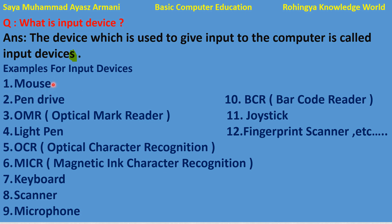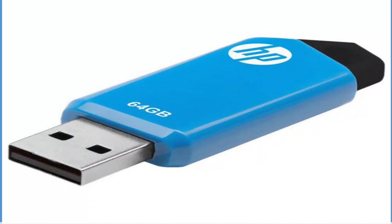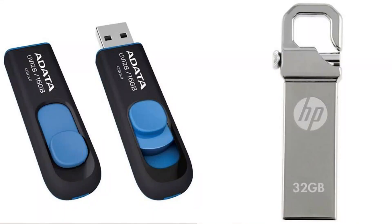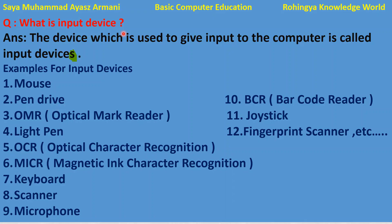The keyboard and mouse are common input devices. Another example is the pen drive. The pen drive stores memory. You can connect a pen drive to a computer using a USB port, save data onto it, and it is considered an input device.